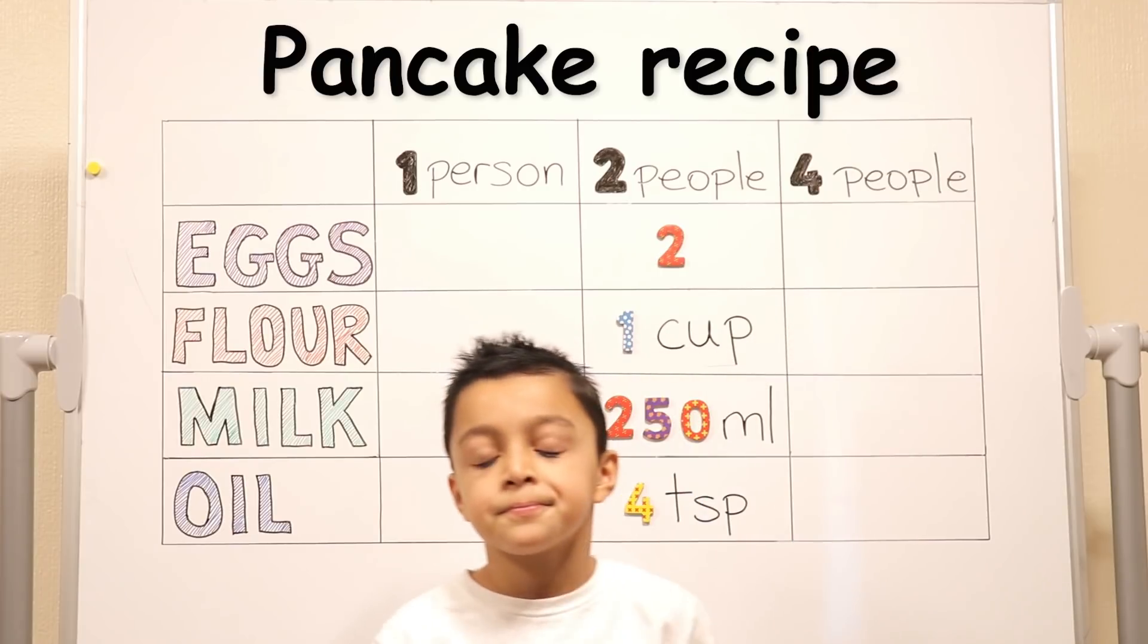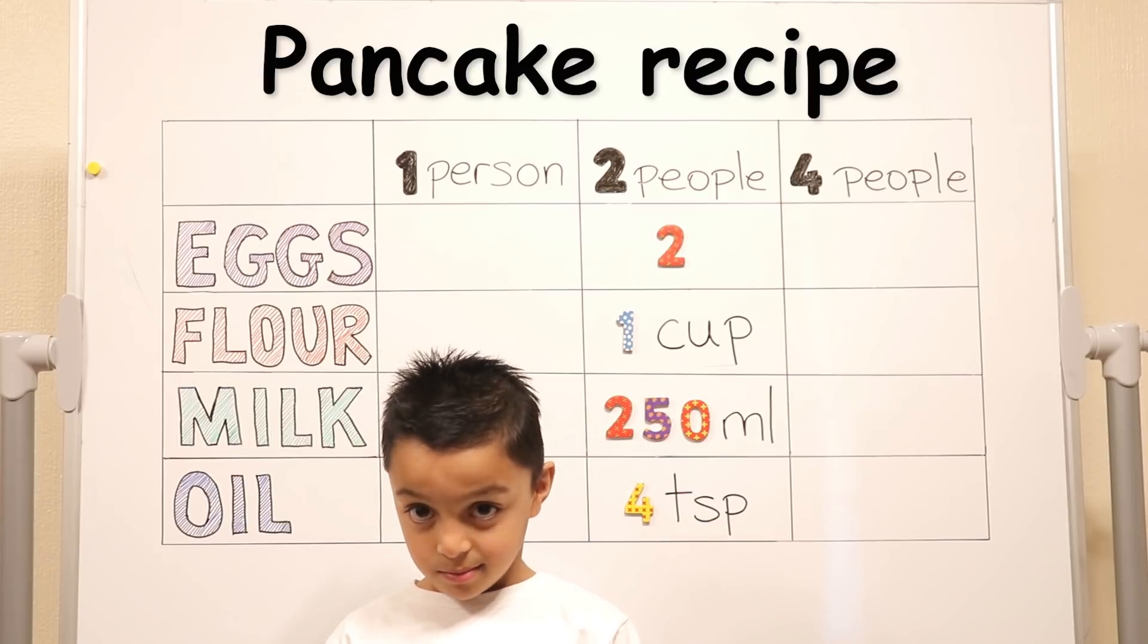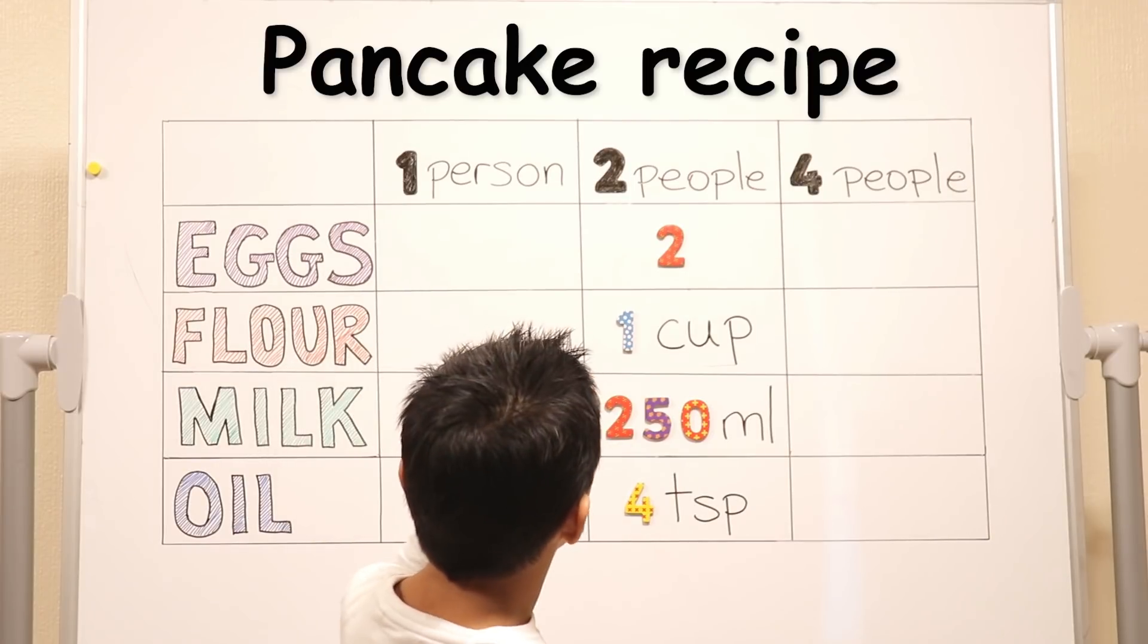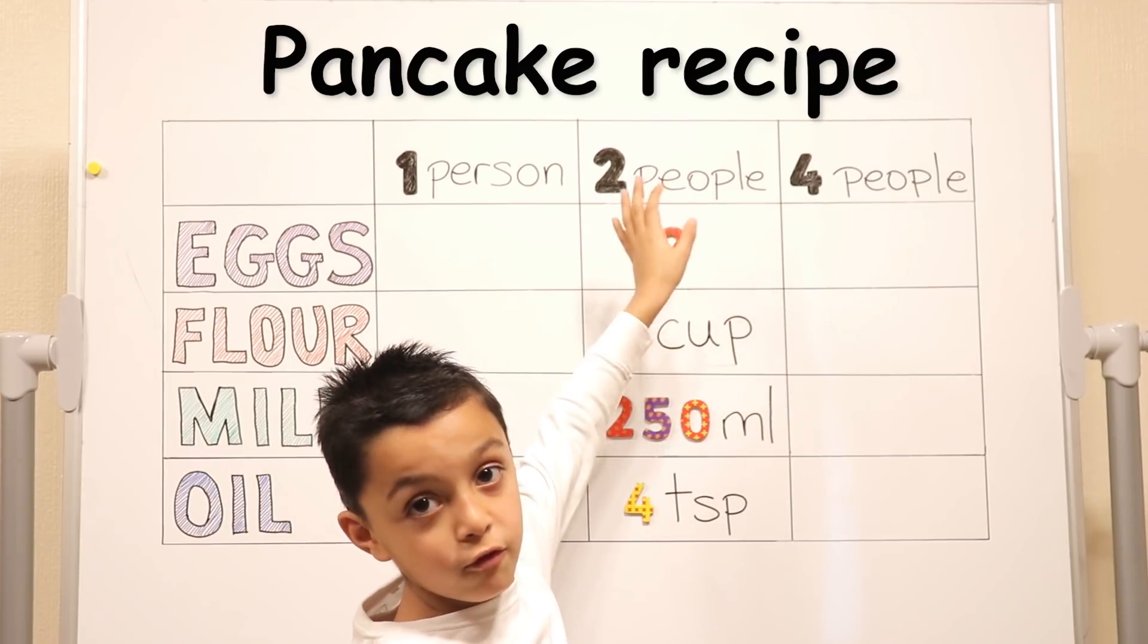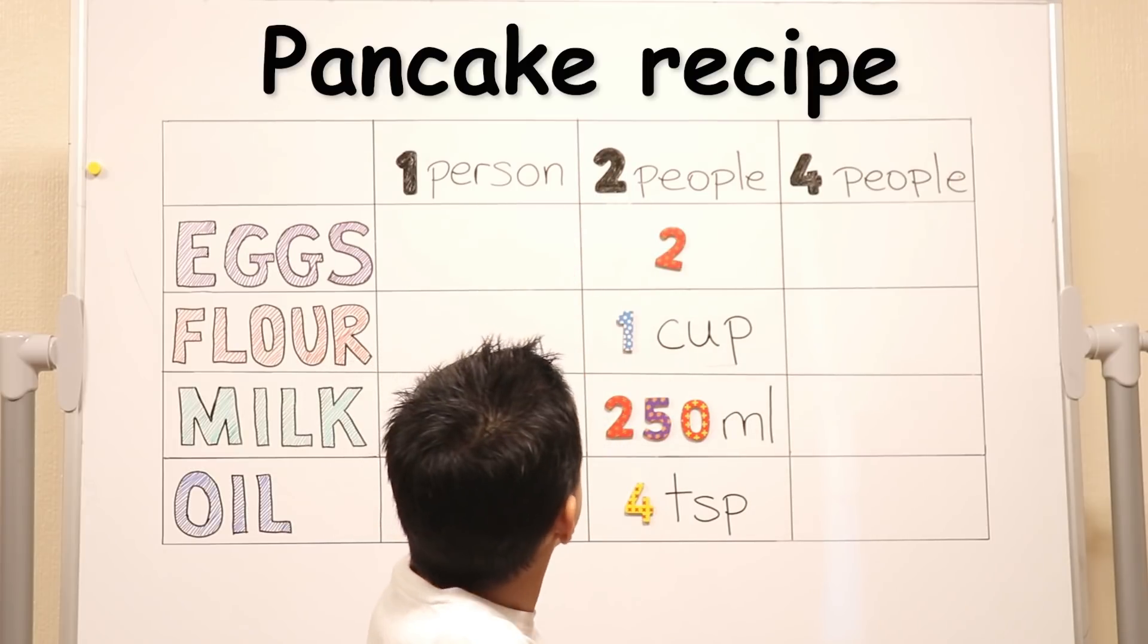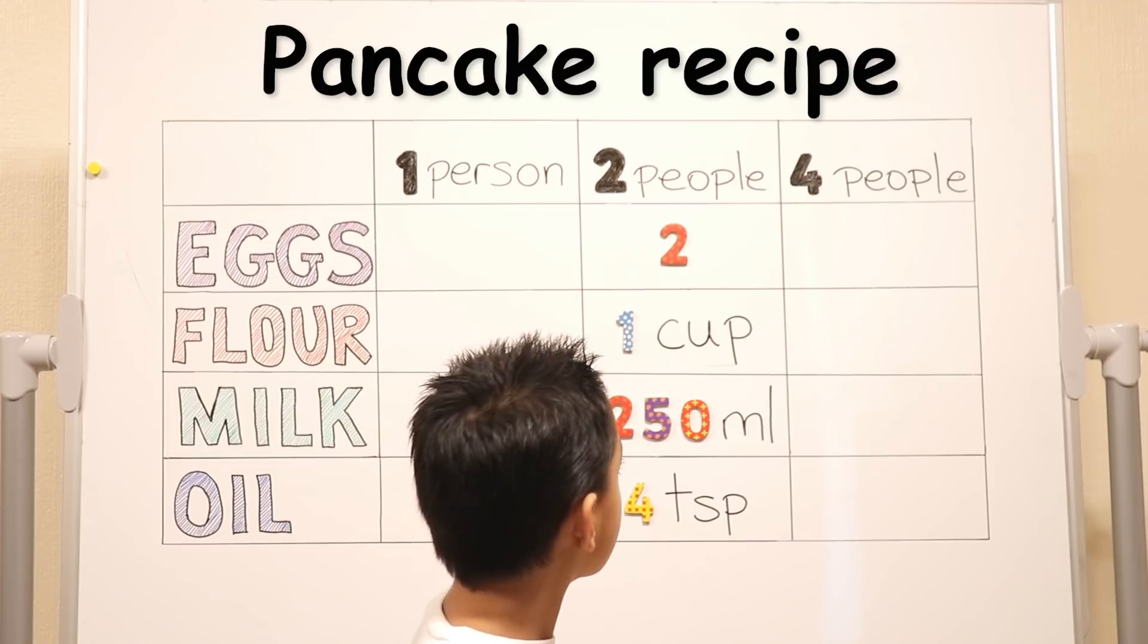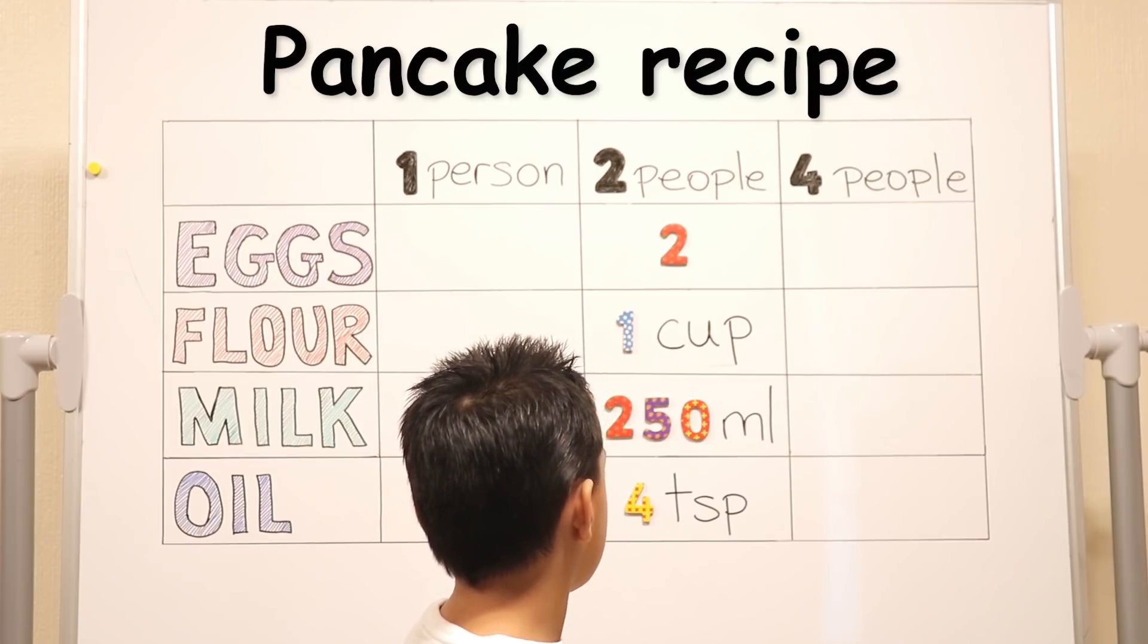So we're going to have different amounts of ingredients depending on how many people we're making pancakes for. What about under two people? That's actually all the list of ingredients that you will need to make enough pancakes for two people.